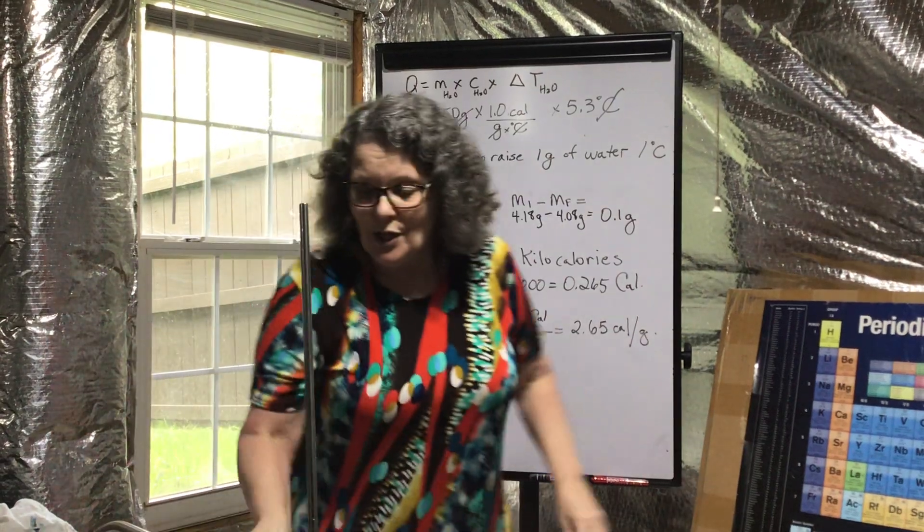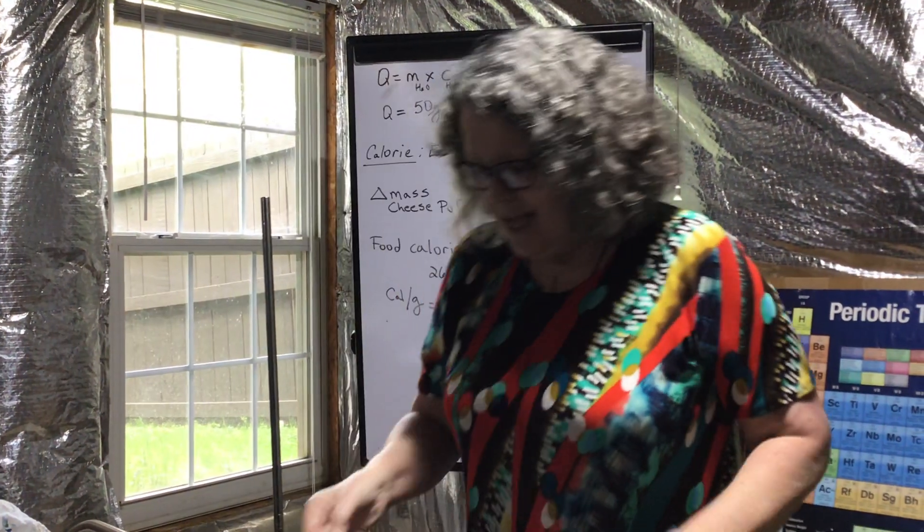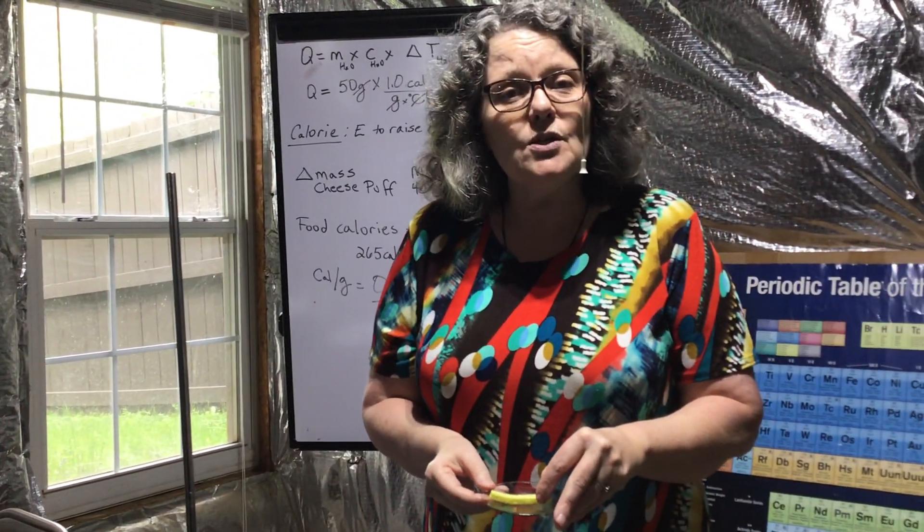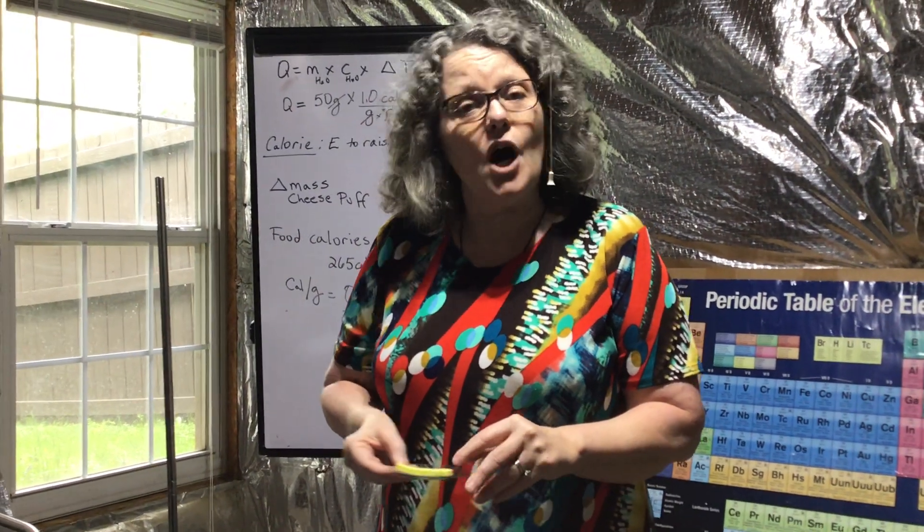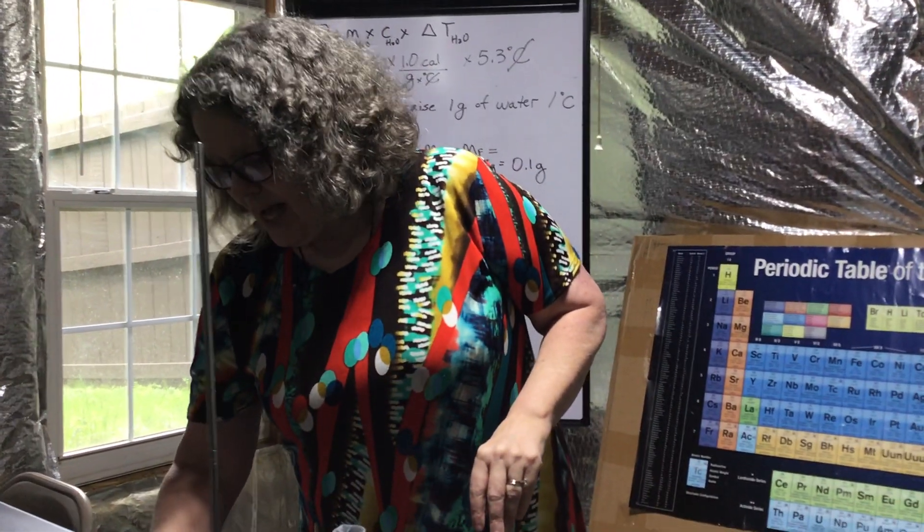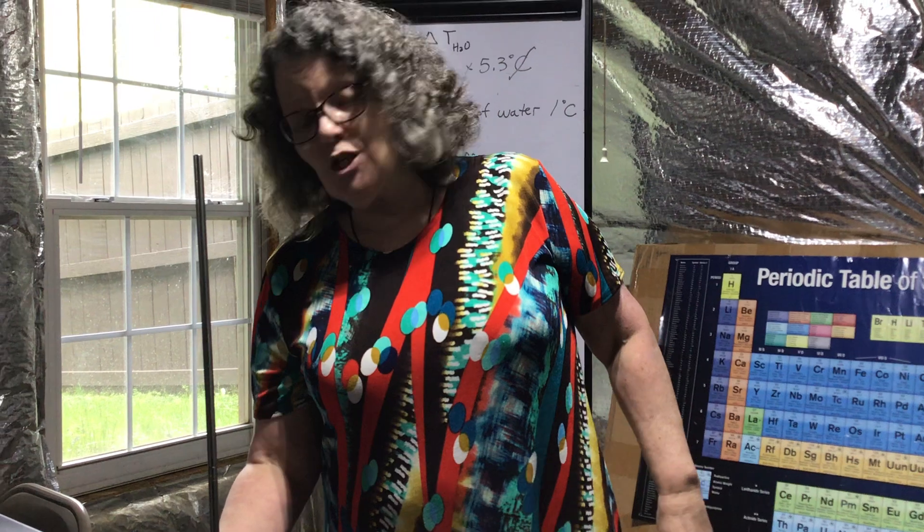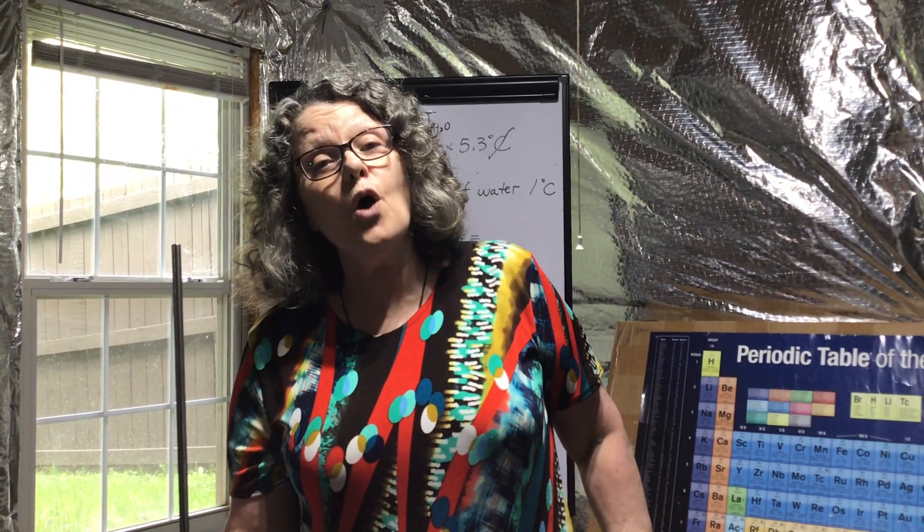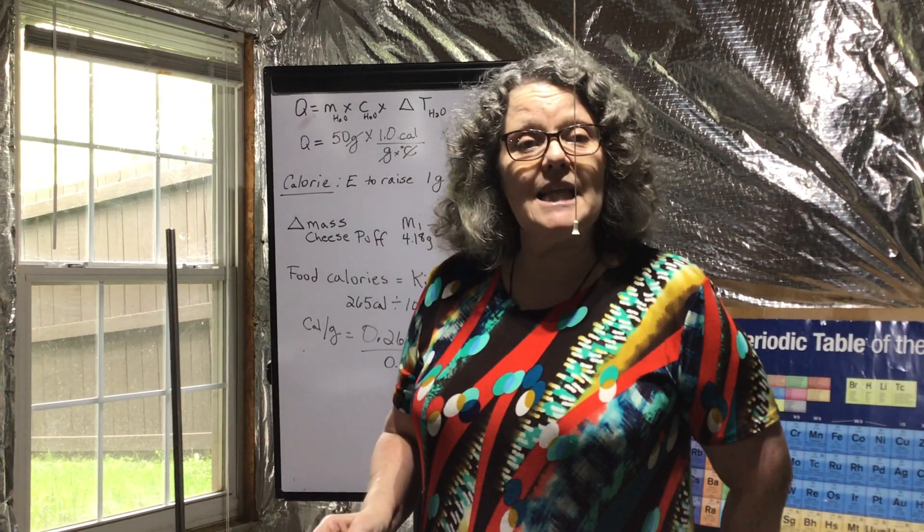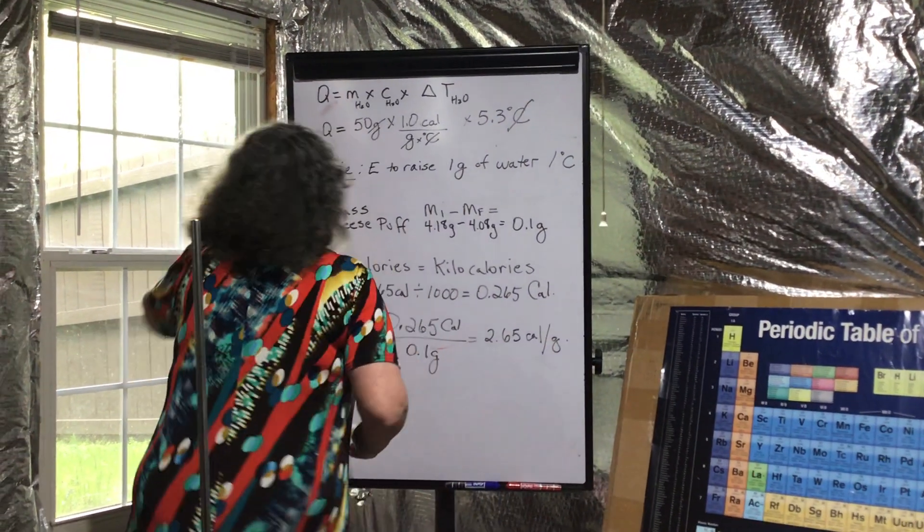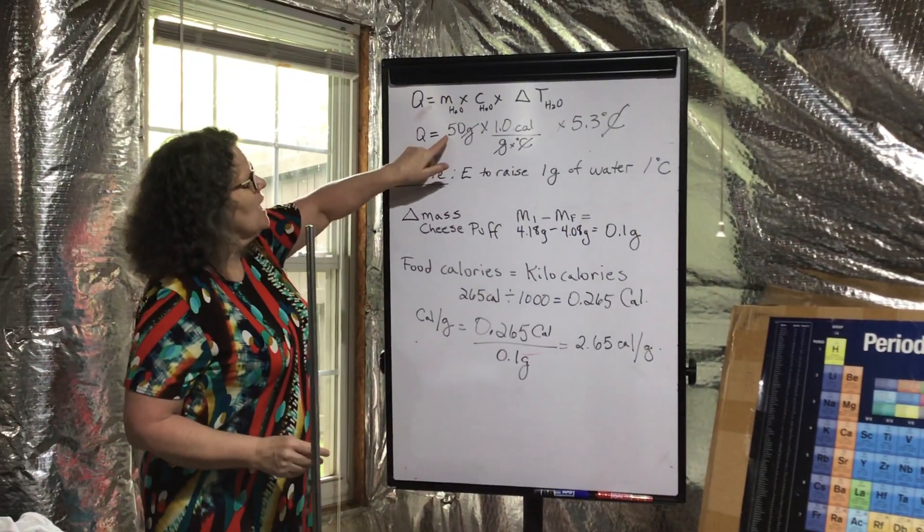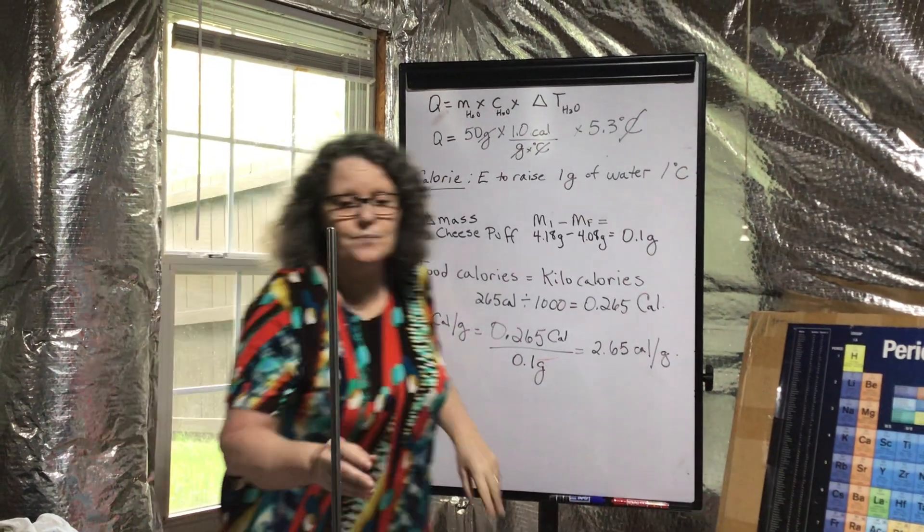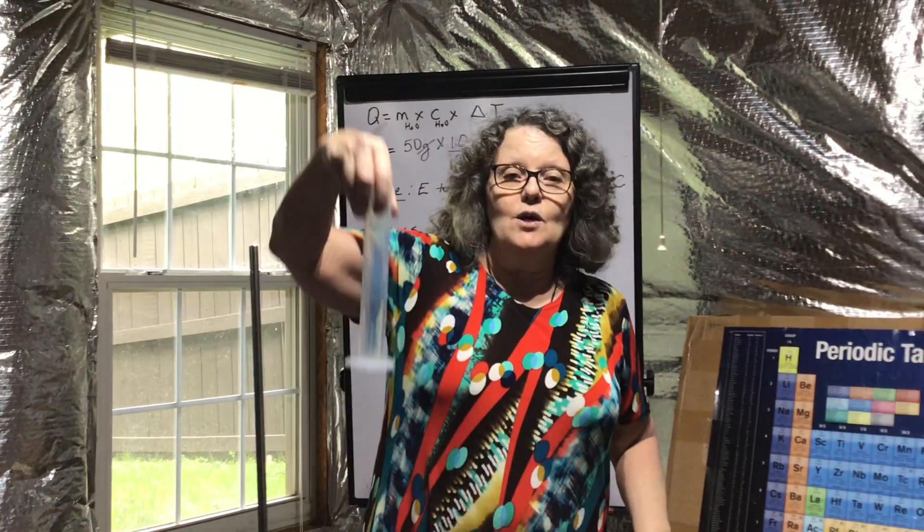What we're doing is burning food to determine how many calories are in the food, and we're assuming that all the energy, the heat from the food, is transferred to the water inside the soda can calorimeter. In this case we have 50 grams of water.